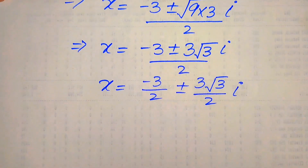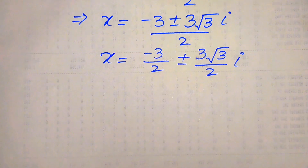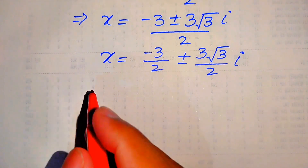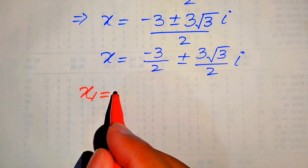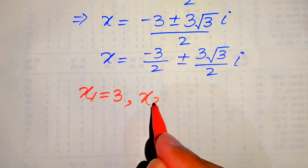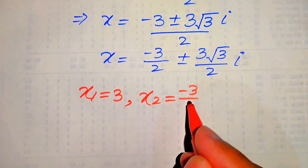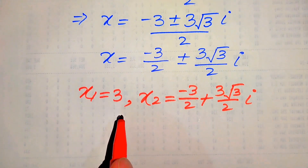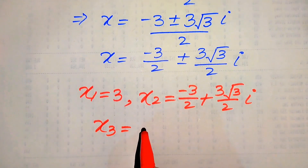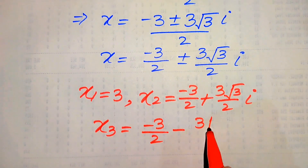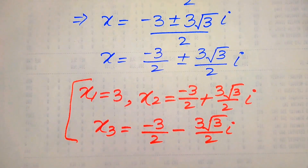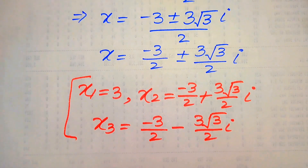These are the other two complex roots of the given equation. Finally, the three roots are: x₁ equals 3, which is the real root; x₂ equals minus 3 over 2 plus 3 times square root of 3 over 2 times iota; and x₃ equals minus 3 over 2 minus 3 times square root of 3 over 2 times iota. This is the final answer. Thank you for watching this video — please subscribe to my channel for more exciting videos.